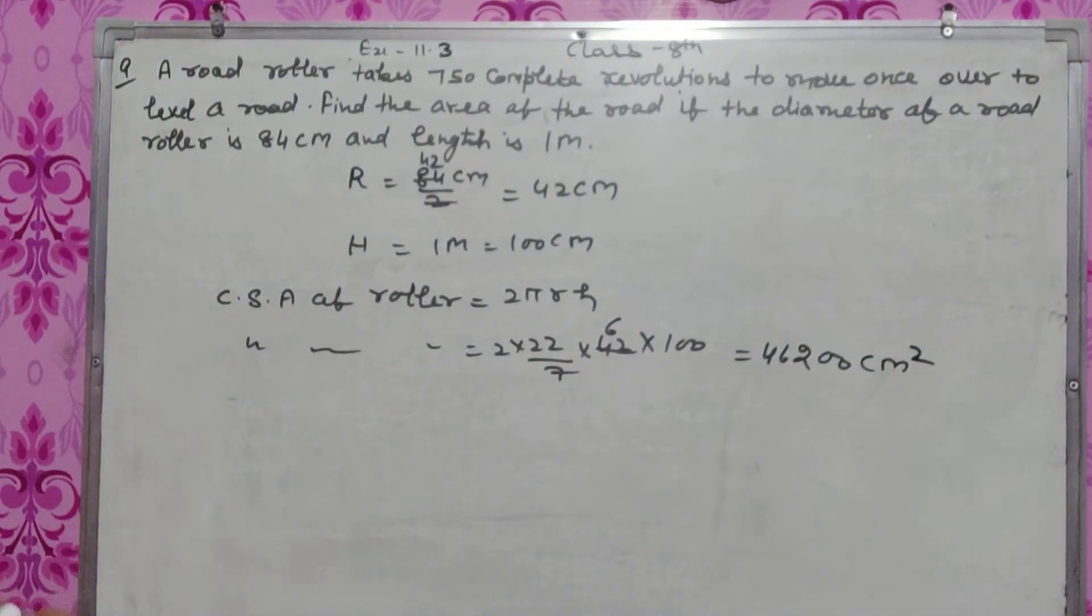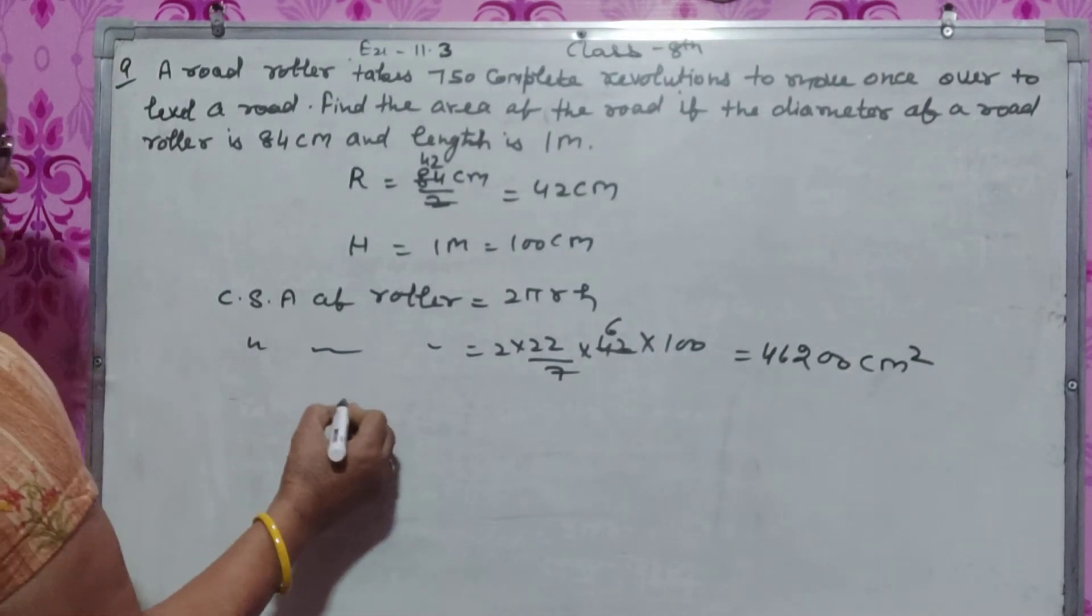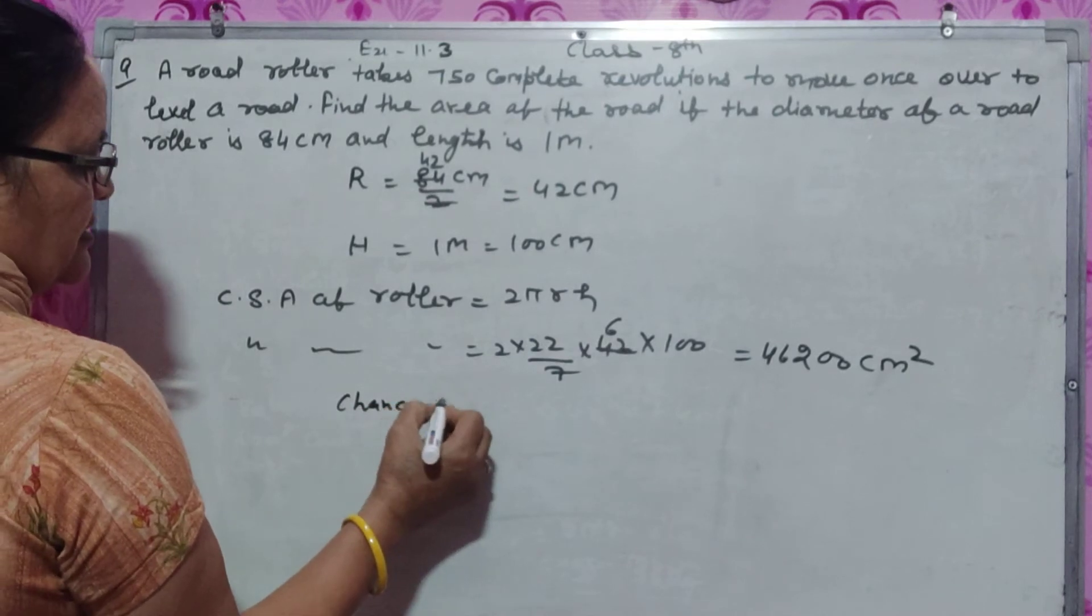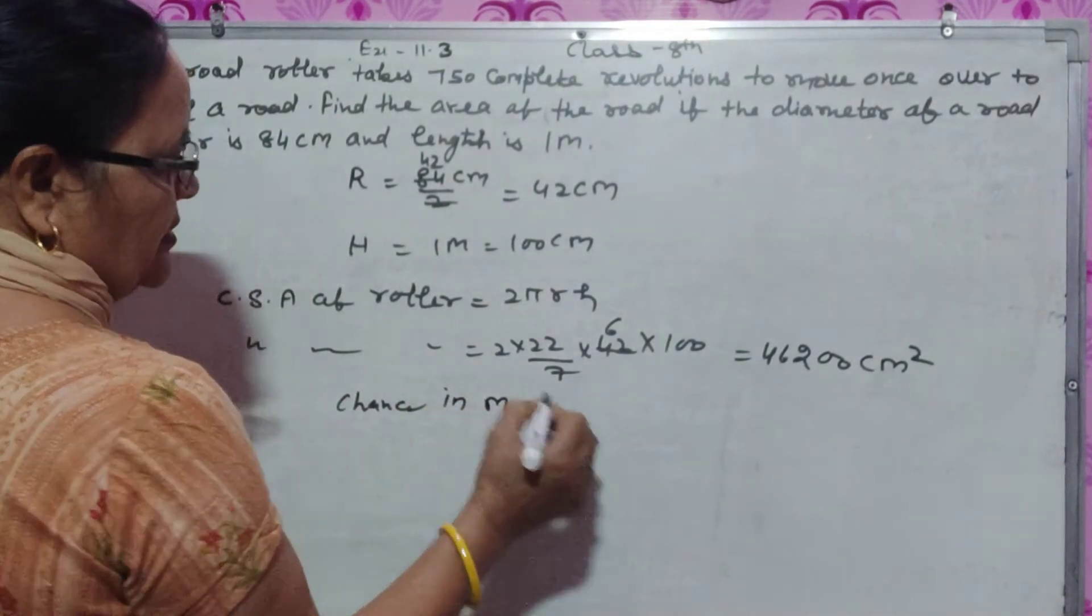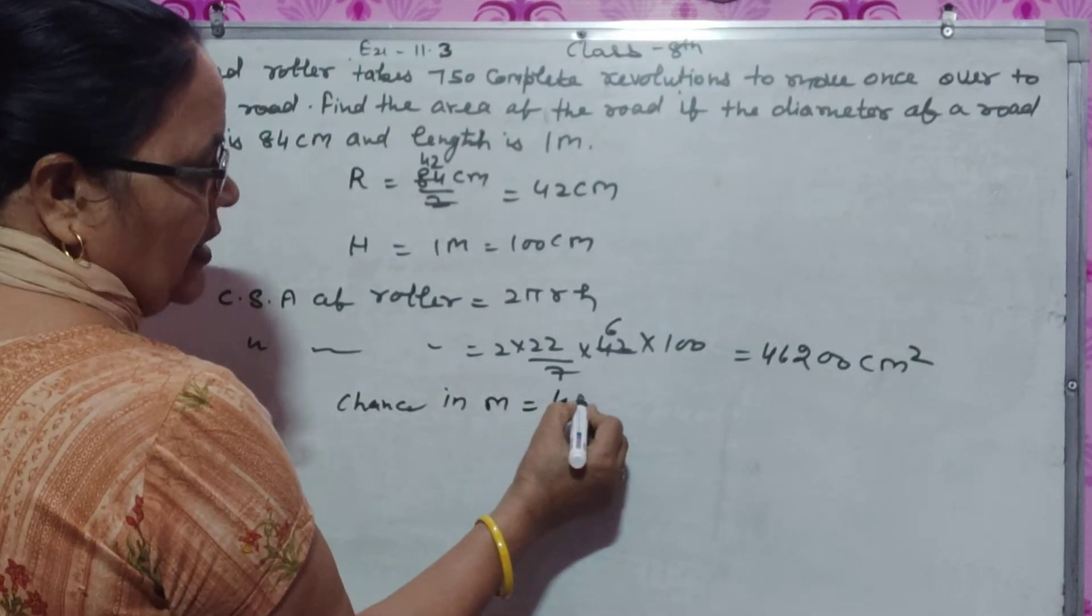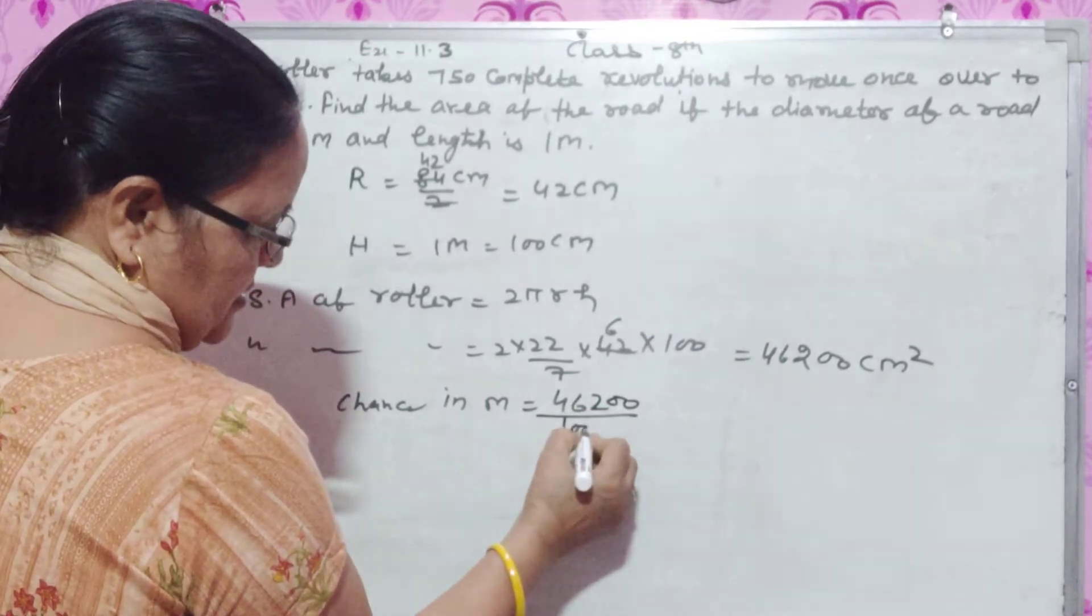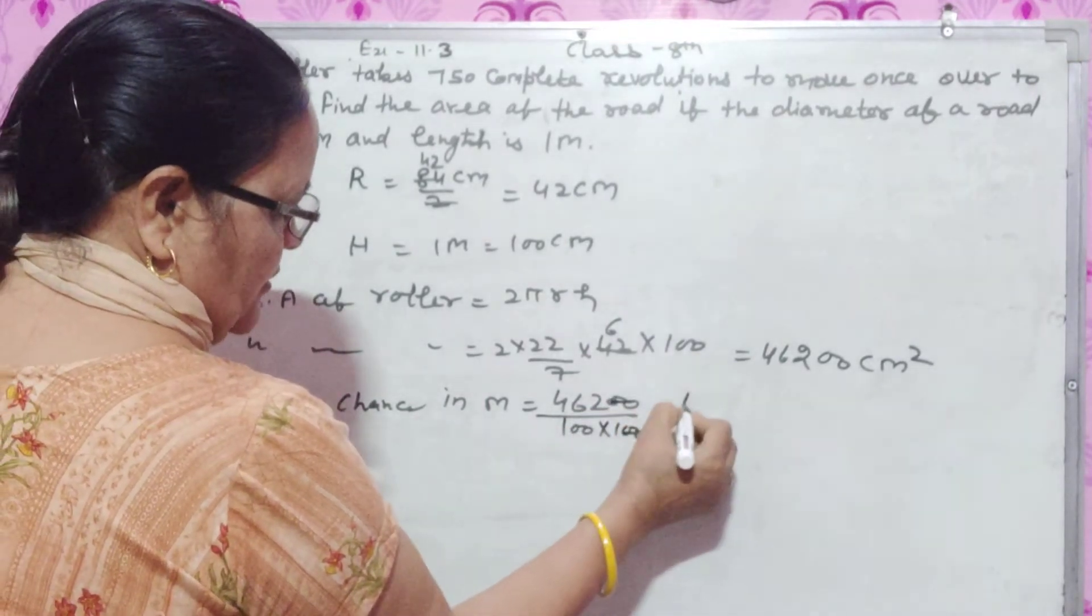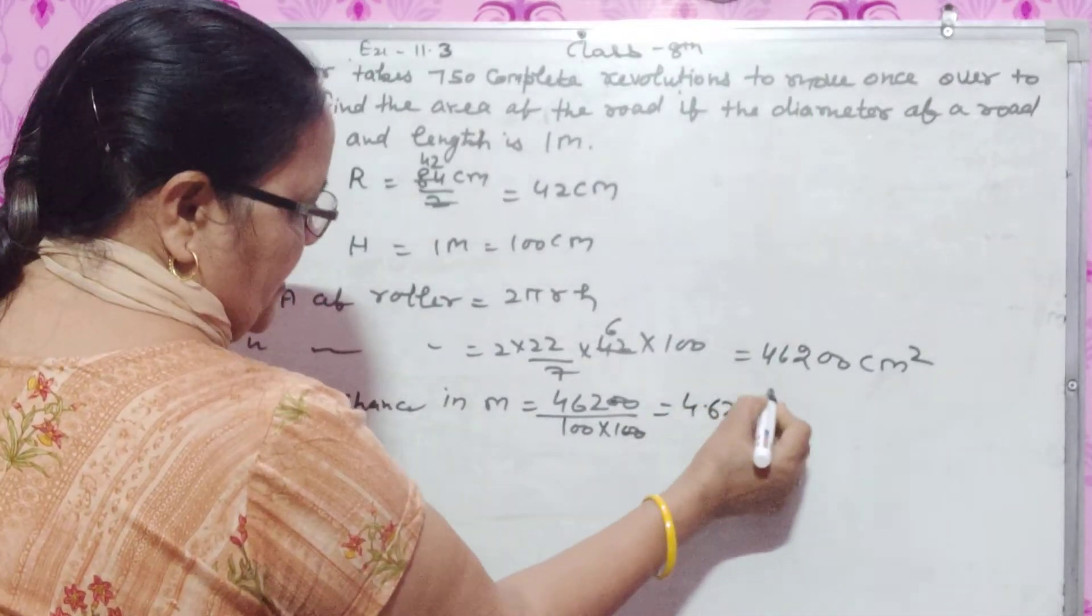Converting to square meters: dividing by 100 times 100 gives us 2.64 square meters. This is the area covered in one revolution.